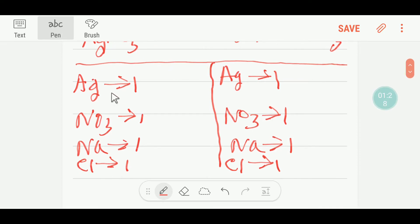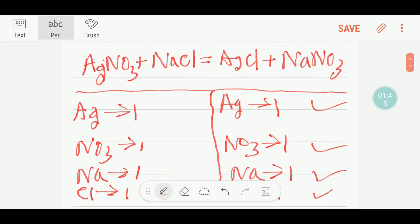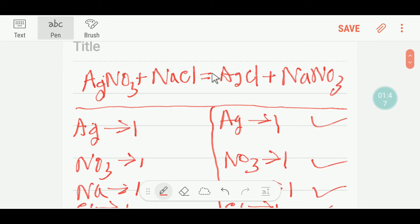Now I will compare the number from each side. Here we have one silver, one silver, so this is balanced. Here we have one nitrate, one nitrate, so this is balanced. Here we have one sodium, one sodium, so this is balanced. Here we have one chlorine, here we have one chlorine, so this is balanced. So this equation is already balanced.